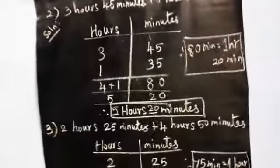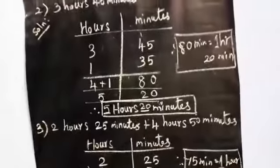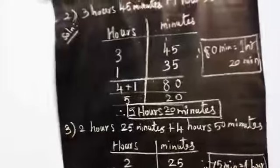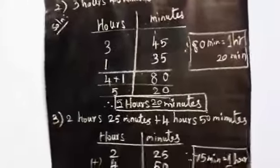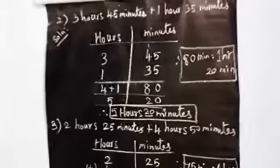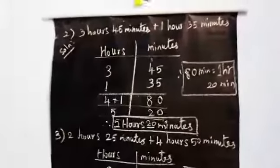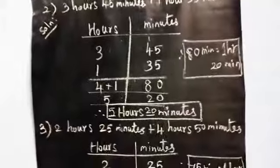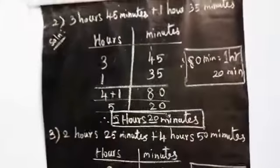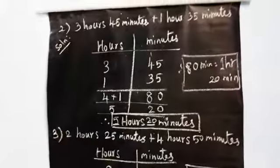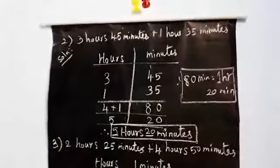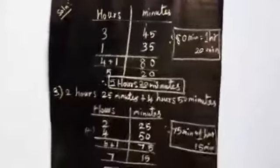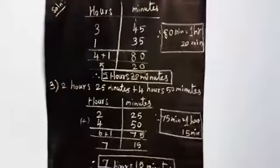You already know about using addition in finding time interval. Just recall the addition method for finding time intervals. Now take your notebook and pen and write down all three sums. Thank you, children.